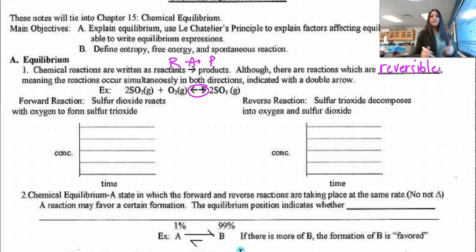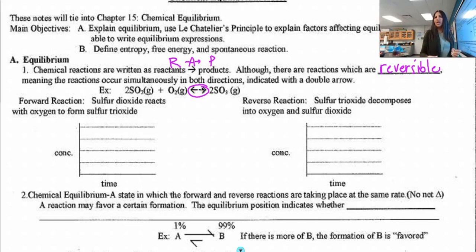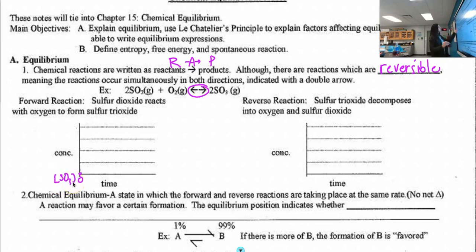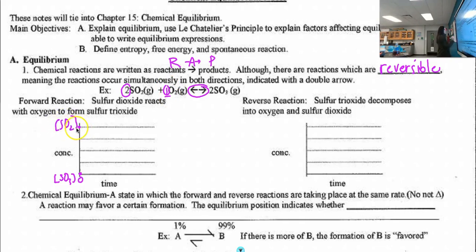Let's start with the forward reaction. Sulfur dioxide reacts with oxygen to form sulfur trioxide. At the beginning of the reaction, how much SO3 is there? Well, SO3 is a product, so at time zero we shouldn't have any. I'll put the concentration of SO3 down here. My SO2 has a coefficient of 2 versus 1 on my oxygen, so I should have double the moles of SO2. I'll put my O2 concentration here as well.